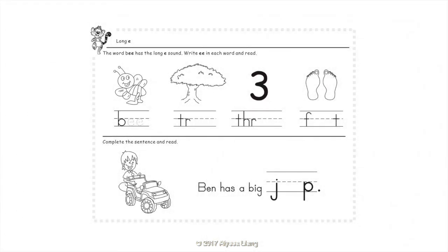Long E. The word 'be' has the long E sound. Write E in each word and read. Be. Tree. Three. Feet.